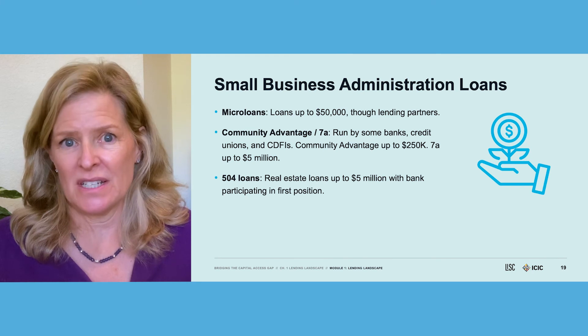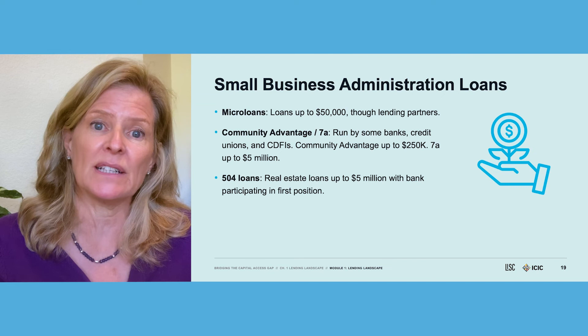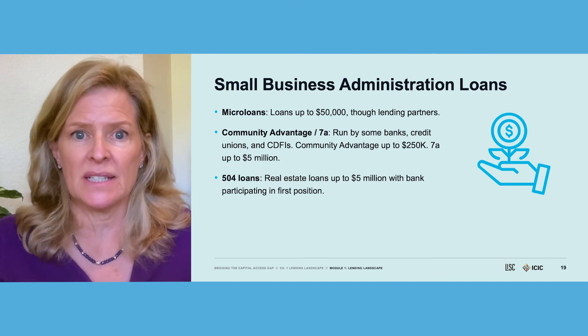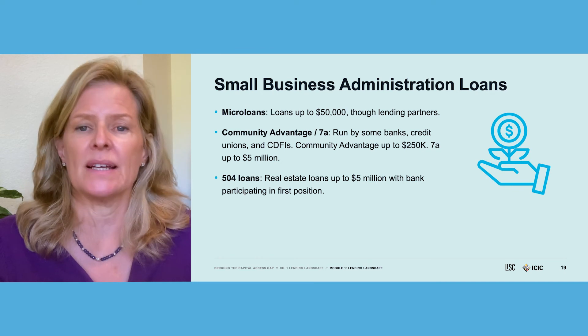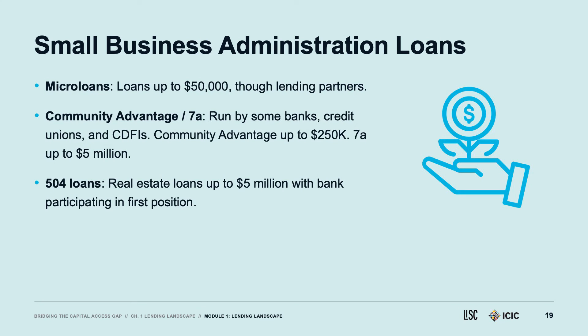The Small Business Administration offers loans, though for the most part it doesn't directly make loans — it works through intermediaries. It has three main loan products: Microloans up to $50,000; Community Advantage 7A loans, often done by CDFIs and banks, up to $250,000 or $5 million depending on the institution; and 504 programs, which are usually for very large commercial real estate projects. You can go to the SBA website to find intermediaries doing these loans in your area.